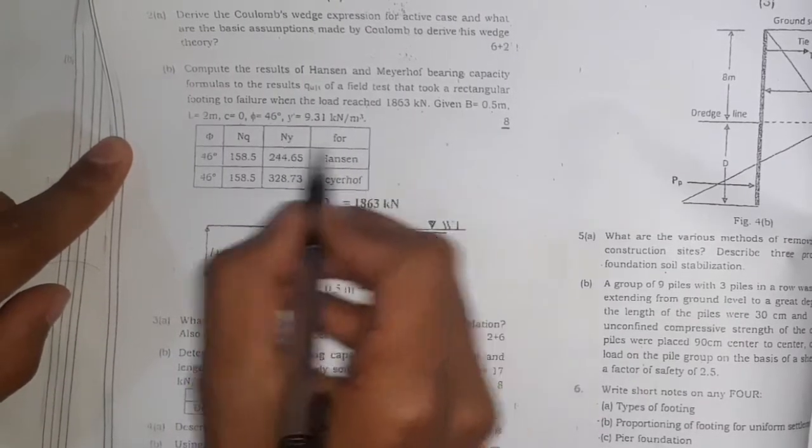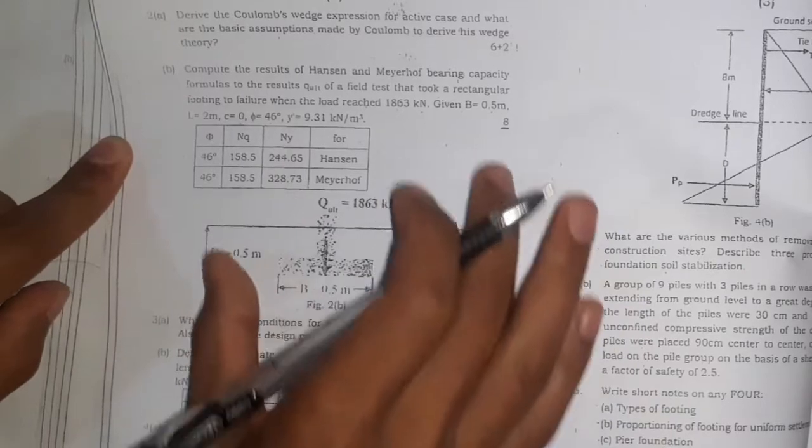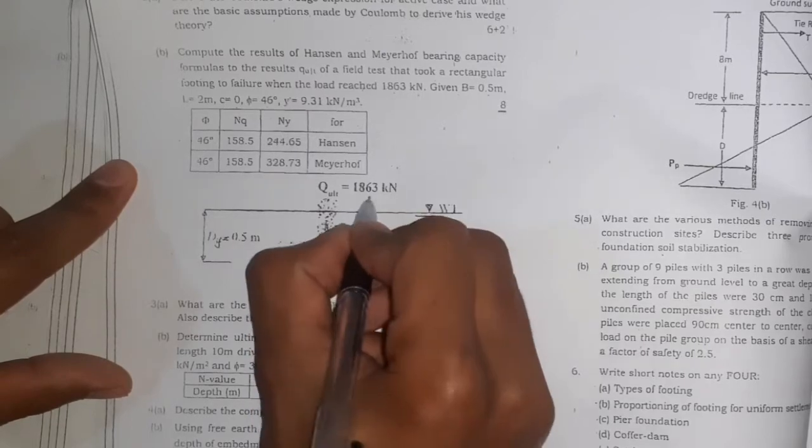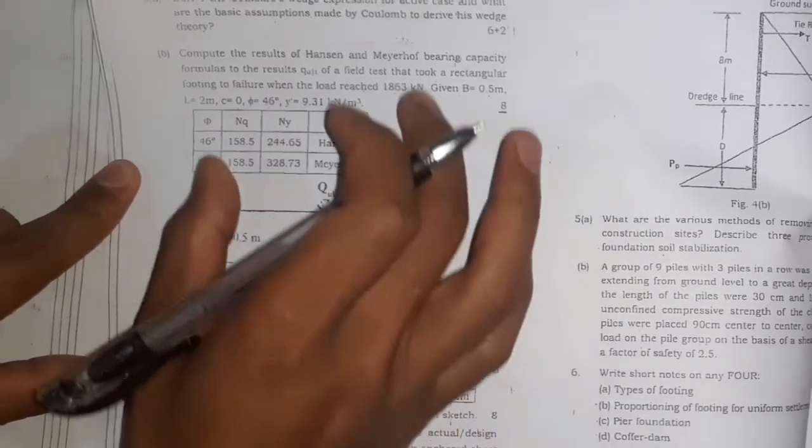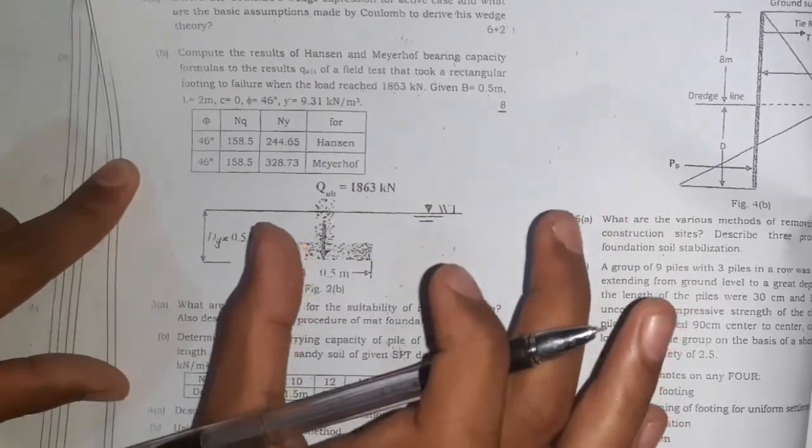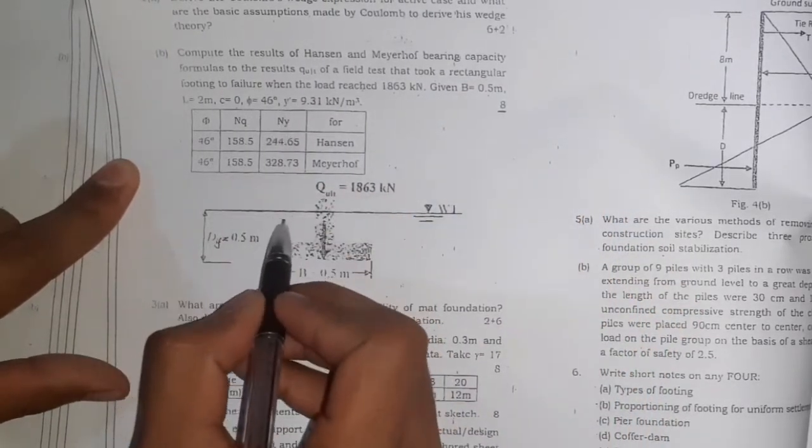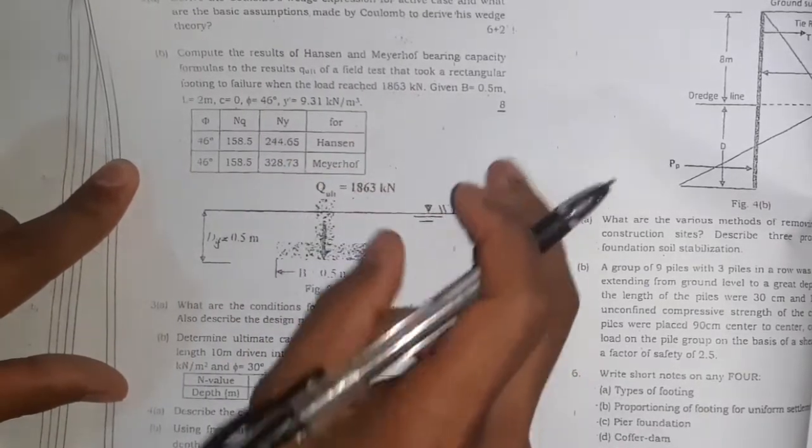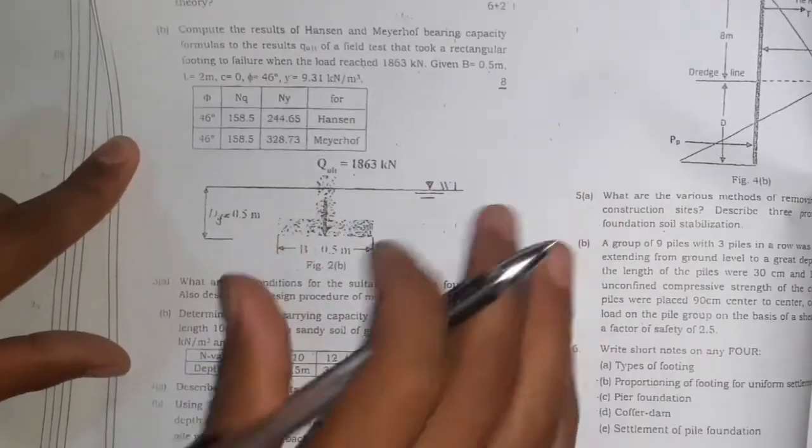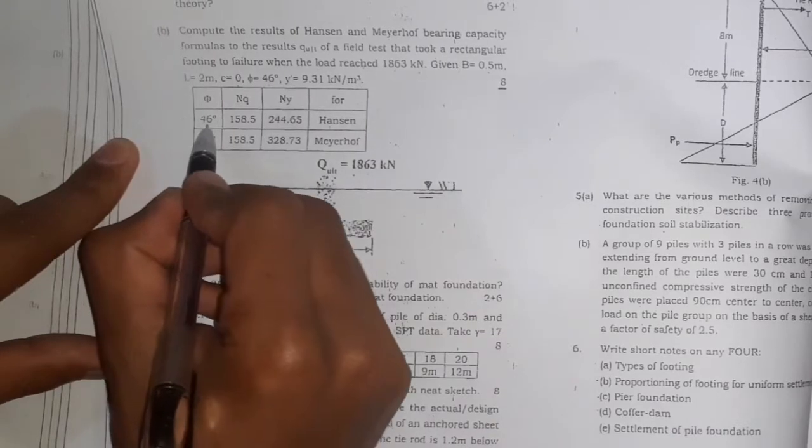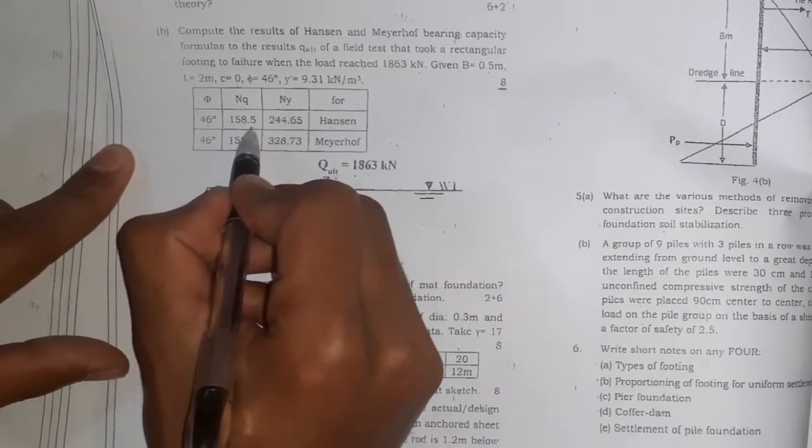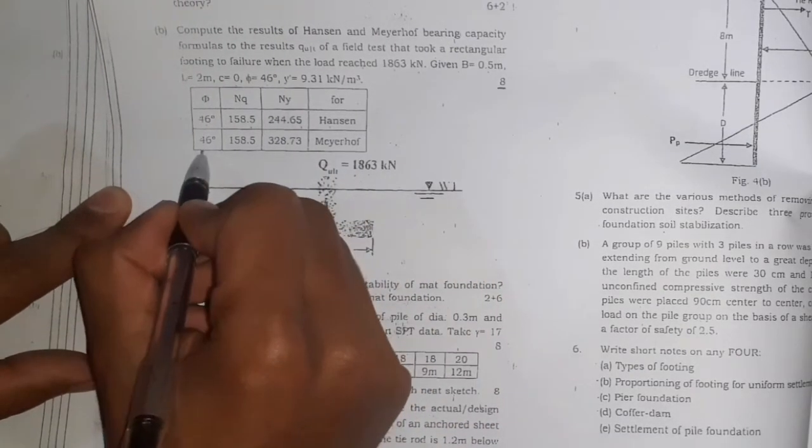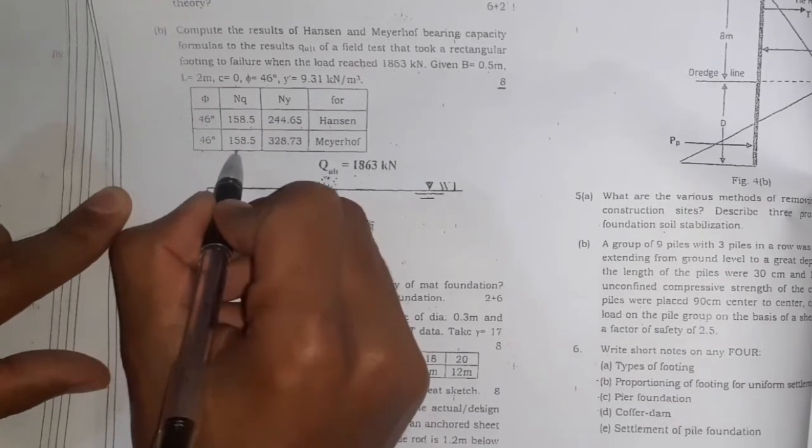Using Terzaghi equation, we calculate q ultimate. From the test, we got q ultimate of 1863 kilonewton. Obviously we will use Terzaghi and Meyerhof formula to calculate q ultimate, then compare our calculated test value with Terzaghi and Meyerhof results. Given φ = 46 degrees, Nq = 158.5, and γ = 244.65.